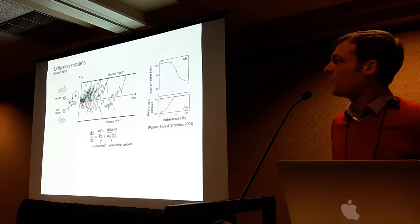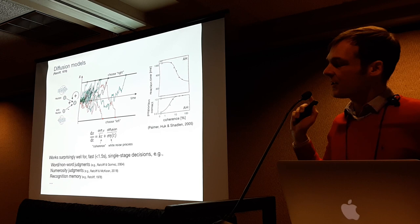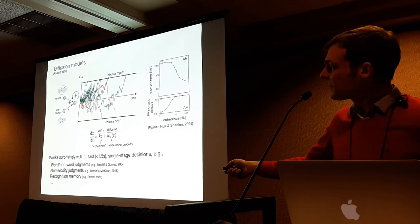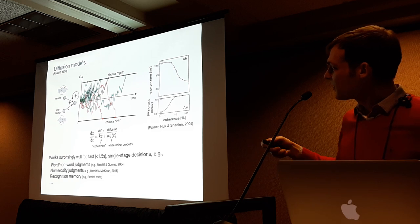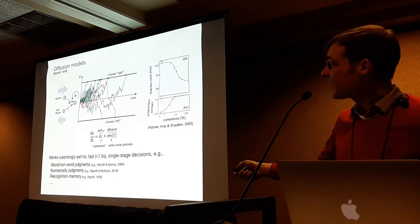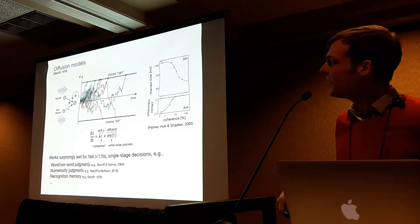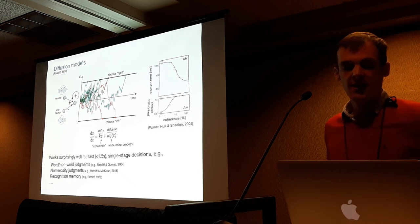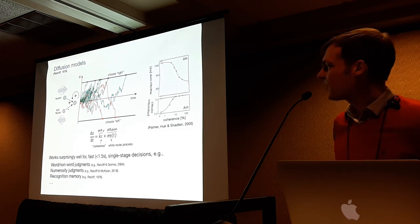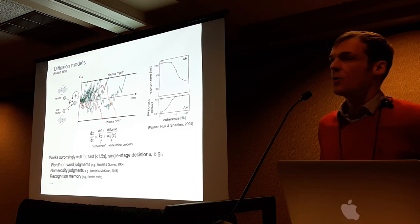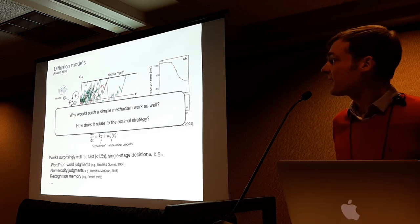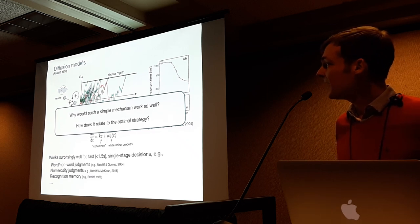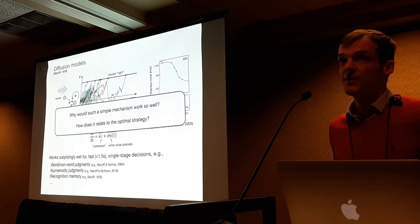This doesn't only work well for the random dot motion task — it also works well for a lot of fast, short timescale, single-stage decisions, like word/non-word judgments, numerosity judgments, or recognition memory. The question I want to ask is: why does such a simple mechanism actually work so well? Why does it describe behavior so well, and how does it relate to the optimal strategy?